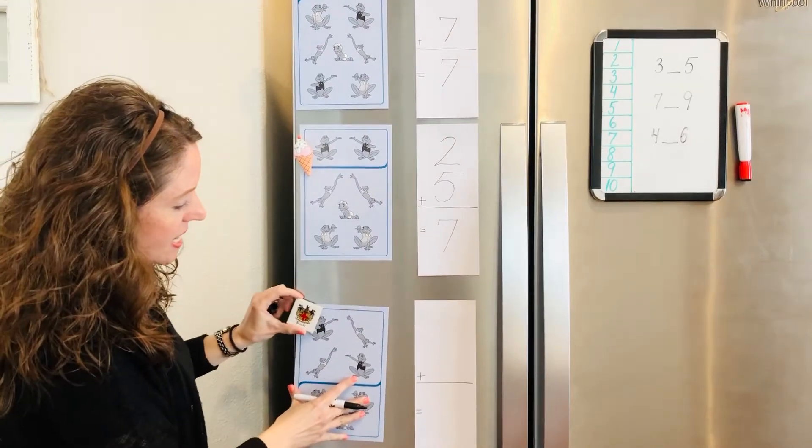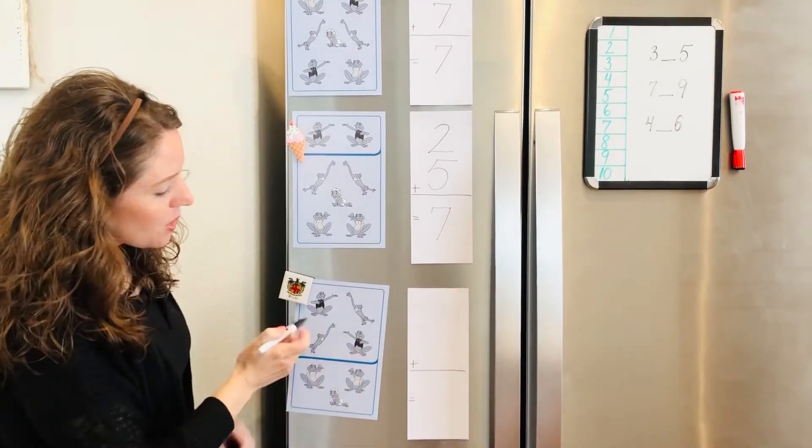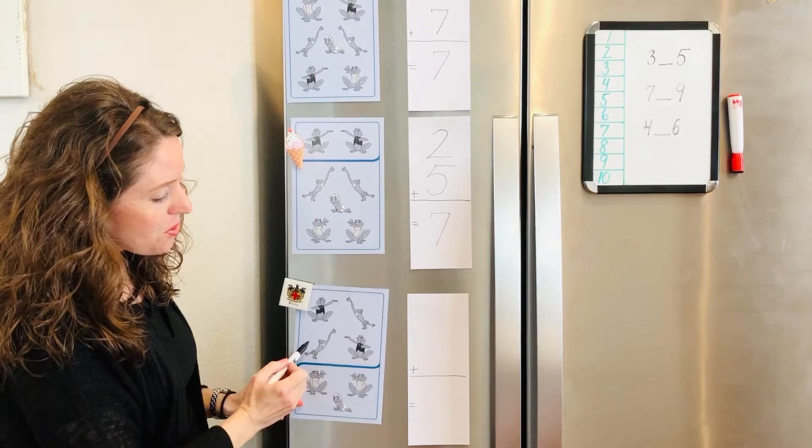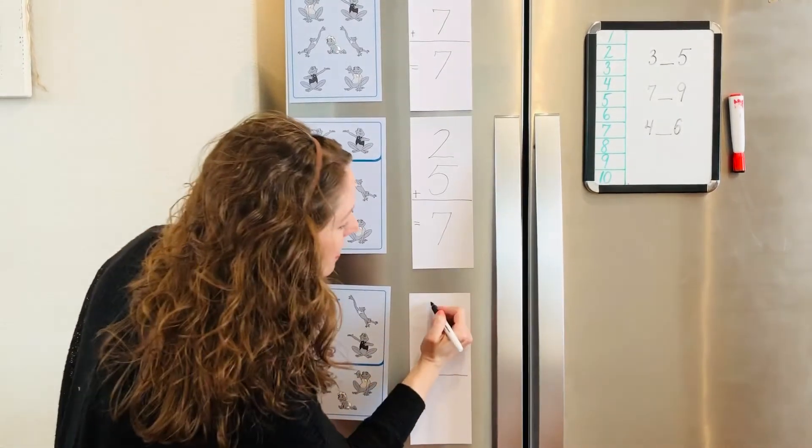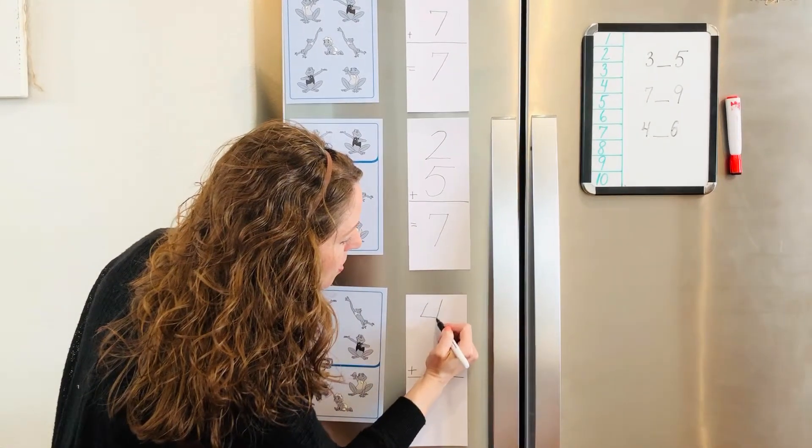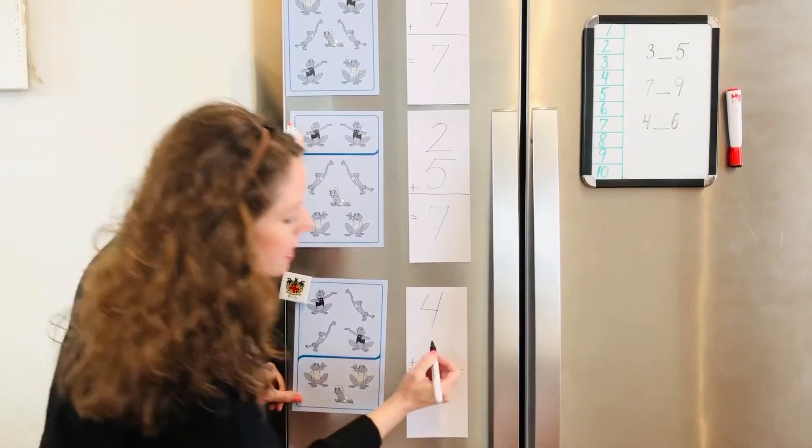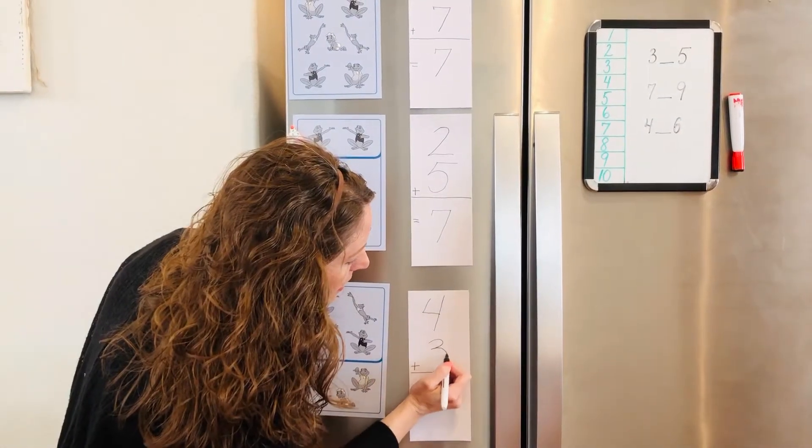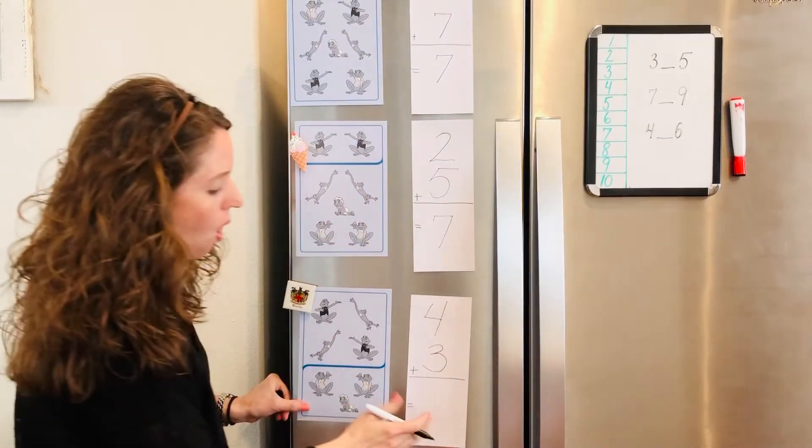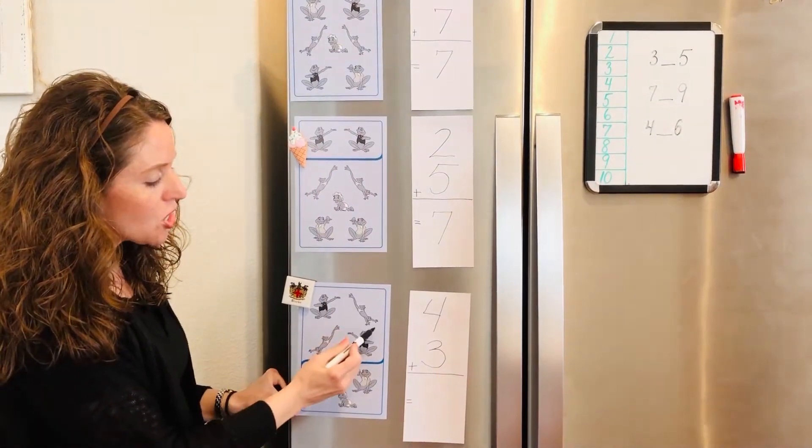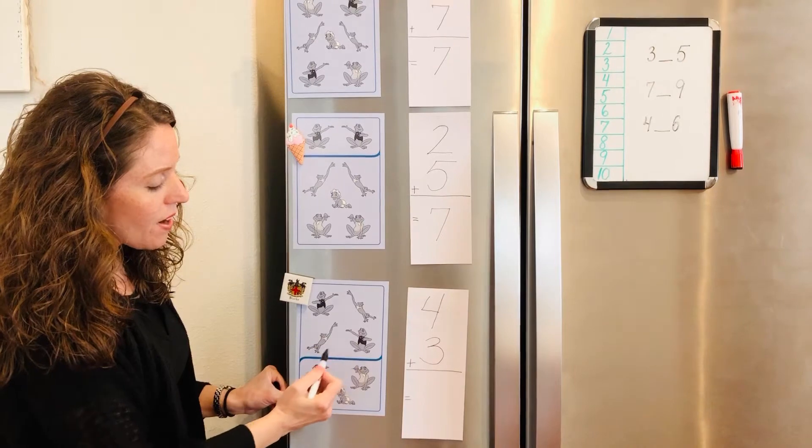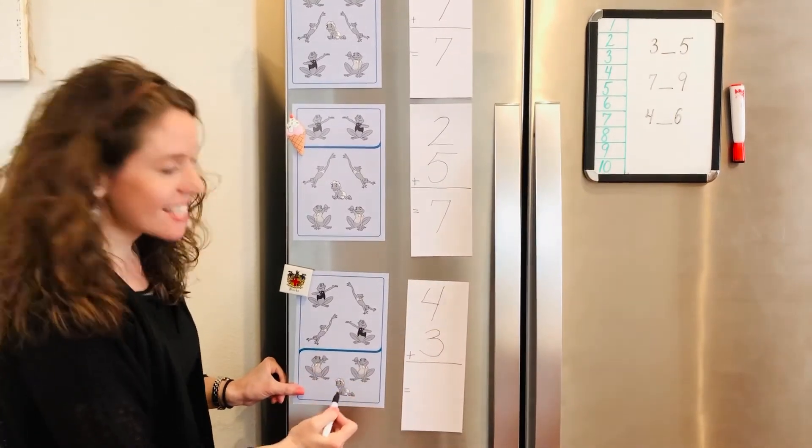One more today. Here we have one, two, three, four frogs. I write number four plus one, two, three equals all the frogs together. One, two, three, four, five, six, seven.